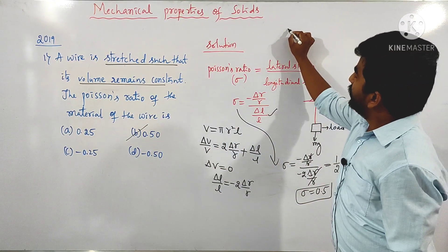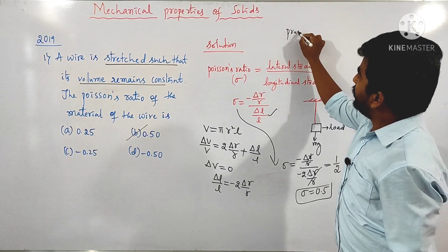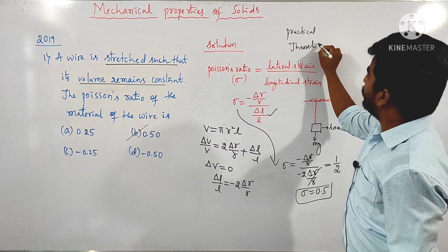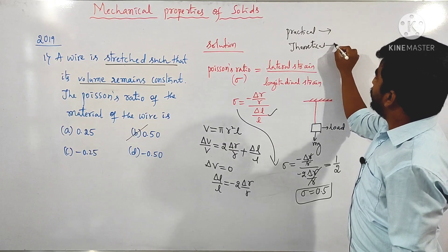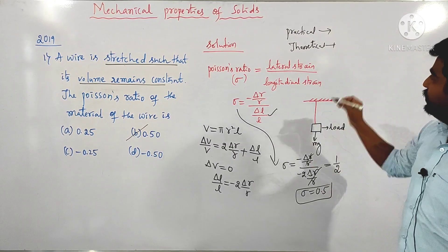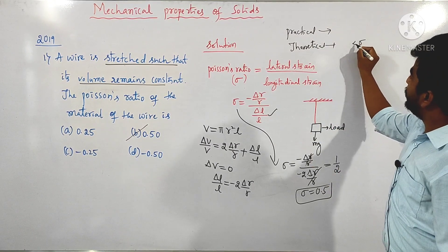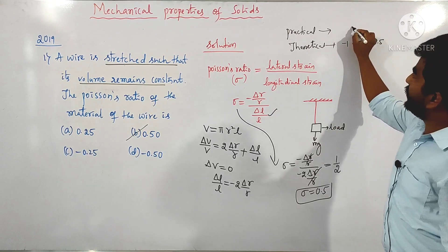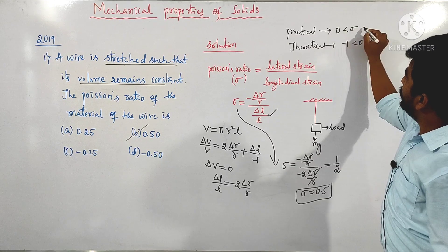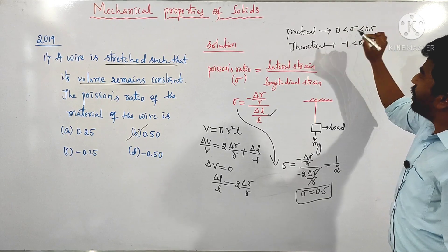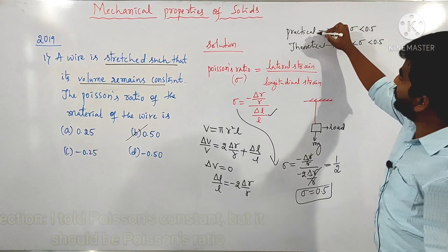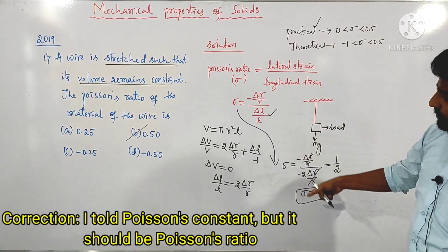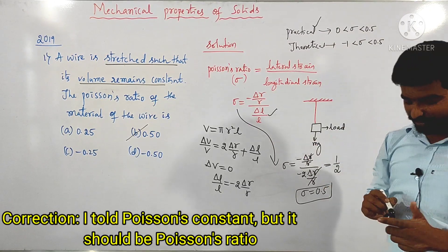Note: the practical and theoretical values are different. The theoretical value of sigma is greater than minus 1 and less than 0.5. The practical value is greater than 0 and less than 0.5. Almost all materials have a practical value of Poisson's ratio in this range. This is the concept regarding Poisson's ratio.